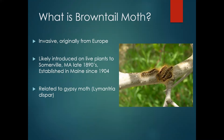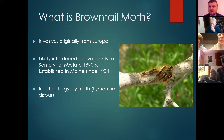Browntail moth is a non-native moth, originally native to Europe. The story I always hear is that it was introduced into Somerville, Massachusetts in 1897 on rose bushes into a florist shop. That florist shop happened to be next to a railroad depot. As you'll see a little bit later in this presentation, browntail moth is very good at hitchhiking, and that little element helped it spread throughout New England. It's also related to gypsy moth, and that'll come into play a little bit later.